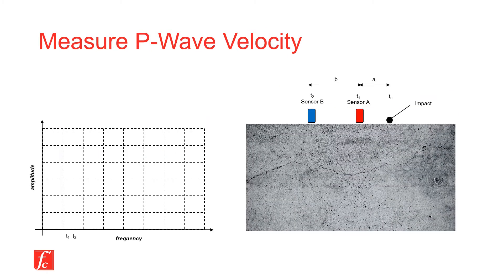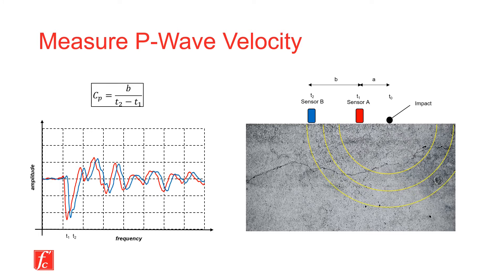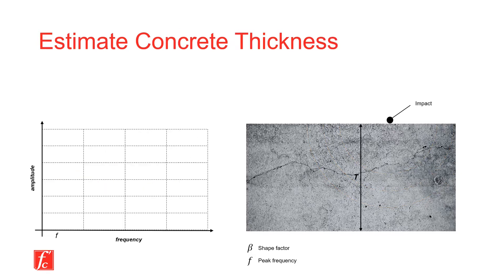The ImpactEcho method can be used to evaluate the P wave speed in concrete. To do so, two motion transducers are placed at a spacing of B. A steel ball impactor is used to strike a concrete surface. The generated P wave is sensed by each transducer at two different time steps, T1 and T2. By dividing the distance by the arrival time difference, one can estimate the P wave speed in concrete.